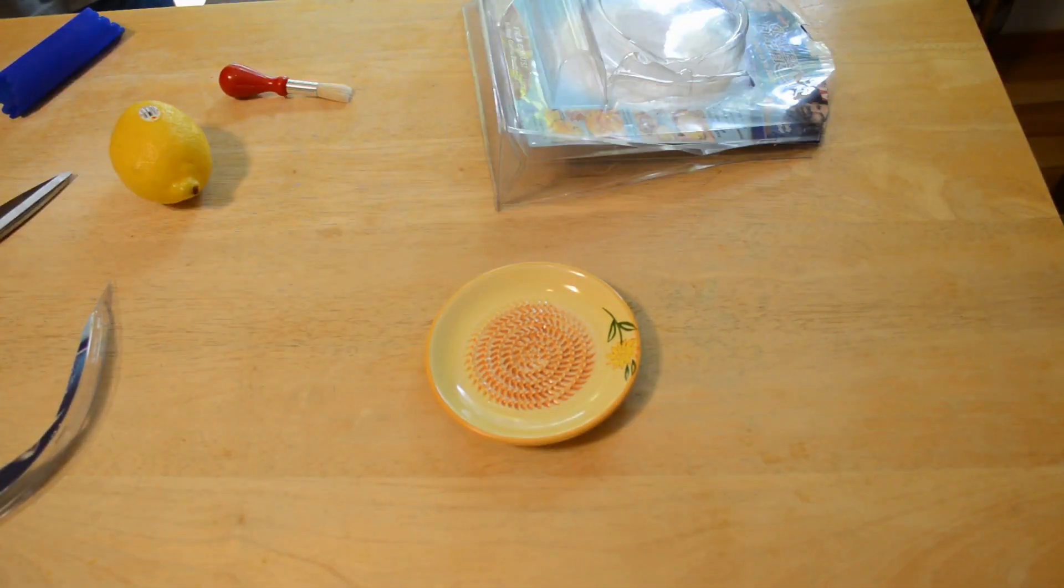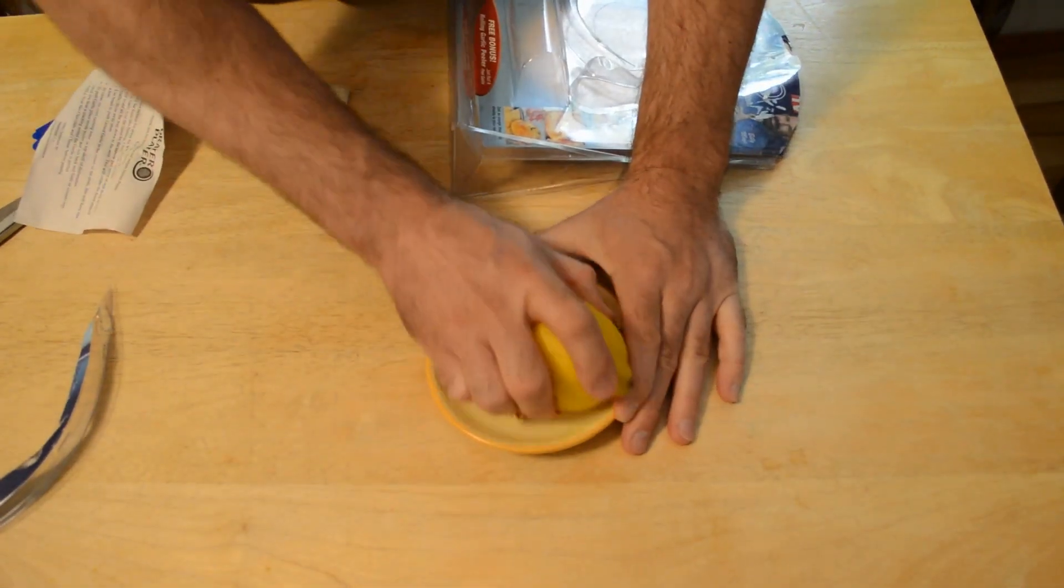It says, always moisten the grater for wet foods like garlic and ginger, or use it dry for foods like nutmeg cheese and chocolate. For garlic, use brush to push garlic or grated garlic to center the plate. Yeah. So it looks like I'm doing it the right way.